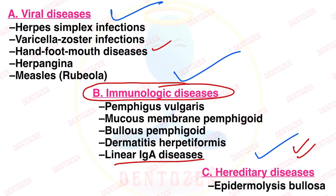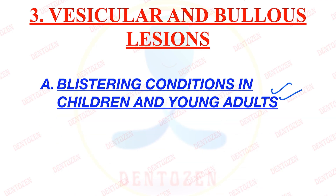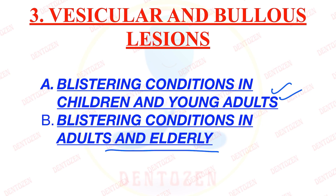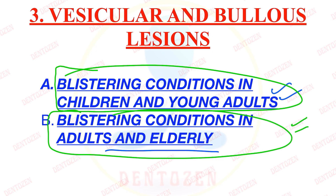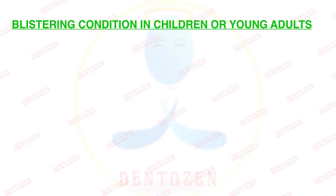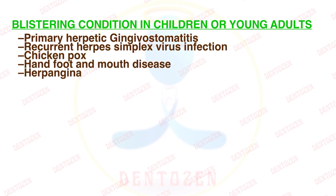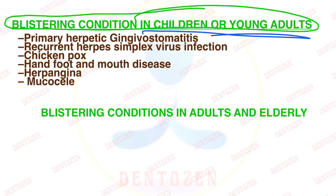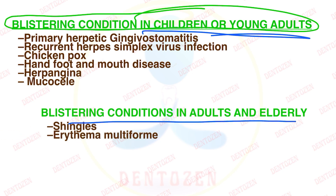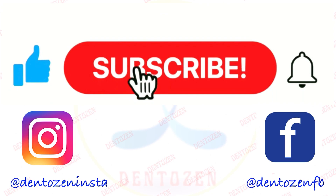The third classification is based on the age group affected. Some blistering conditions are seen in children and young adults, while others occur in adults and the elderly. Conditions affecting children and young adults include primary herpetic gingivostomatitis, recurrent herpes simplex, chickenpox, hand foot mouth disease, herpangina, and mucositis. Conditions seen in adults and the elderly include shingles, erythema multiforme, pemphigoid, pemphigus, linear IgA disease, dermatitis herpetiformis, and angina bullosa hemorrhagica.